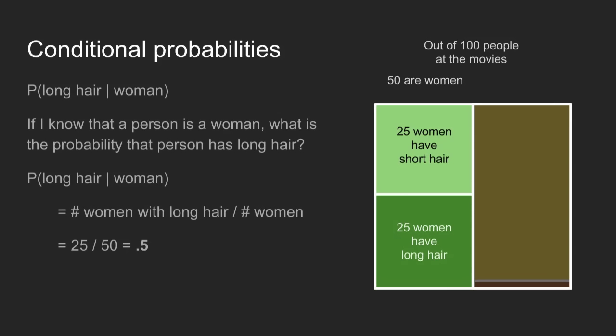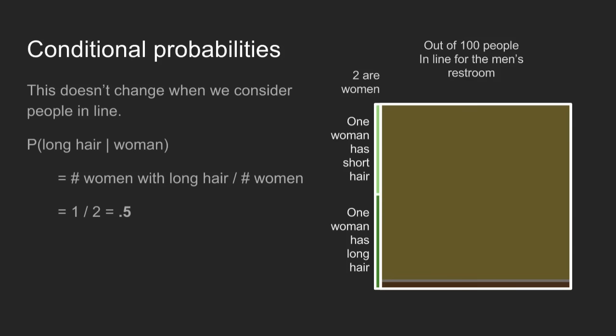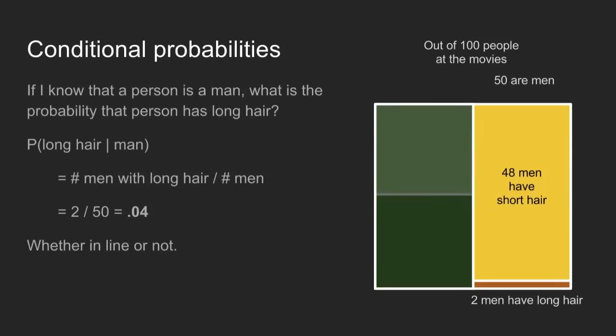To get this, we just divide the number of women with long hair by the total number of women: 50%. And this doesn't change whether there are 50 women in your group or just two — if we know that a person is a woman, the probability they have long hair is still 50%. We can do the same thing with men.